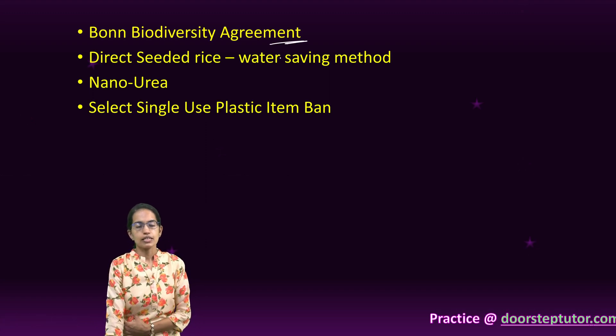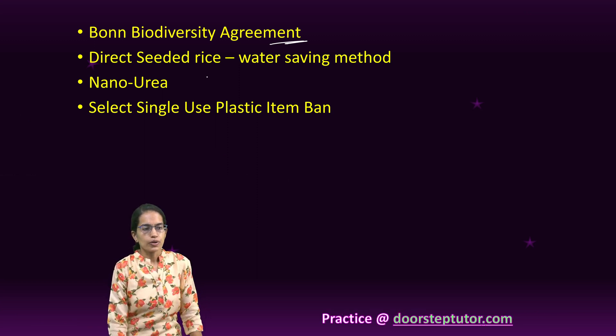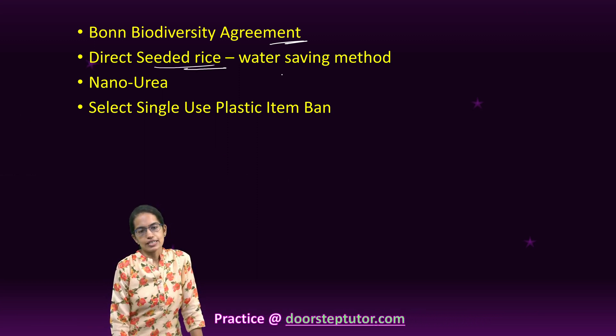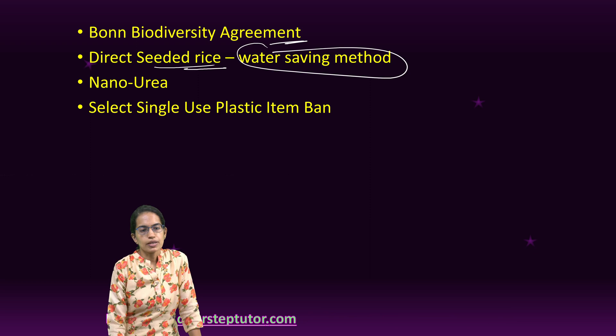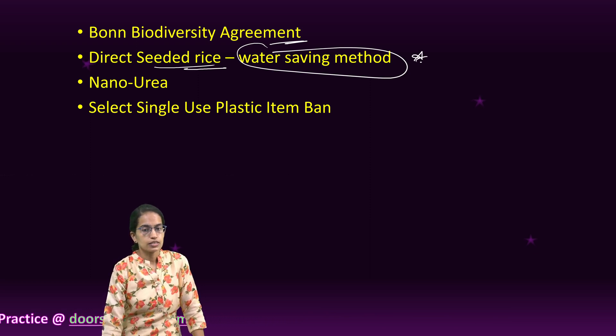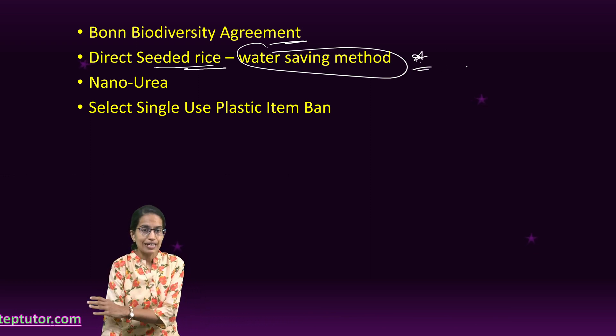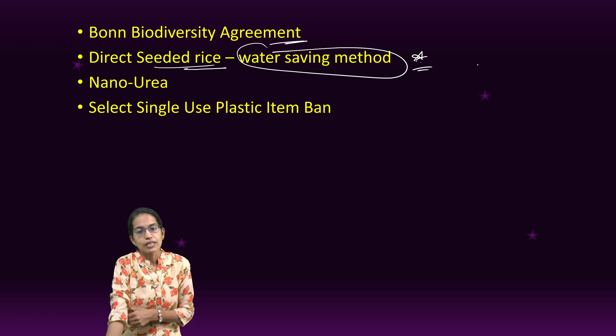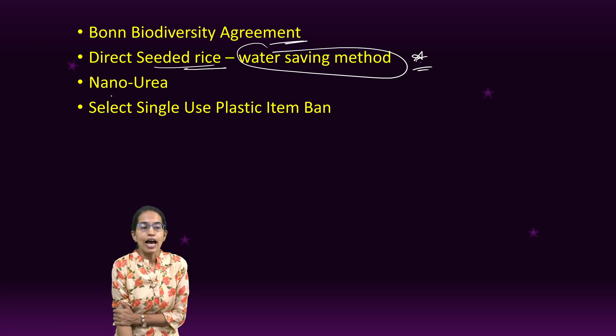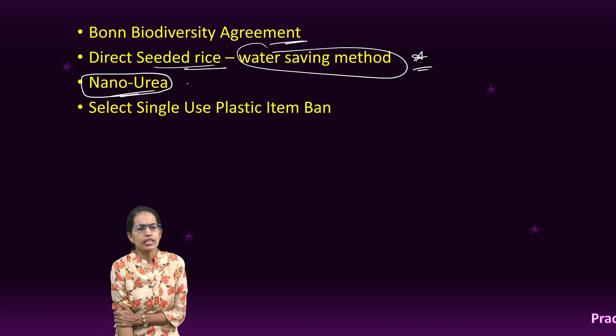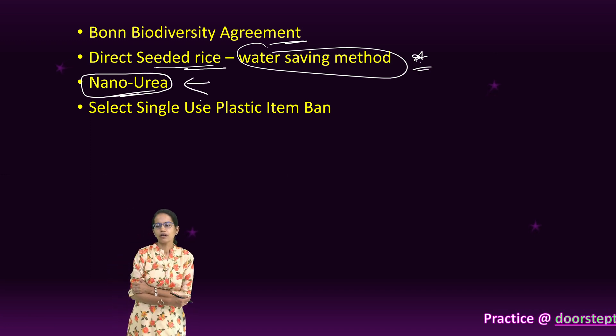Bonn Biodiversity—as I said, the reports are to be out very recently by tomorrow, so extremely important topic. Direct seeded rice—now this is a water-saving method, but how it has failed in the regions of Punjab we have covered a separate lecture on the rice transplantation methods. Nano urea—a recent topic, extremely important. Again, we have covered that in detail.